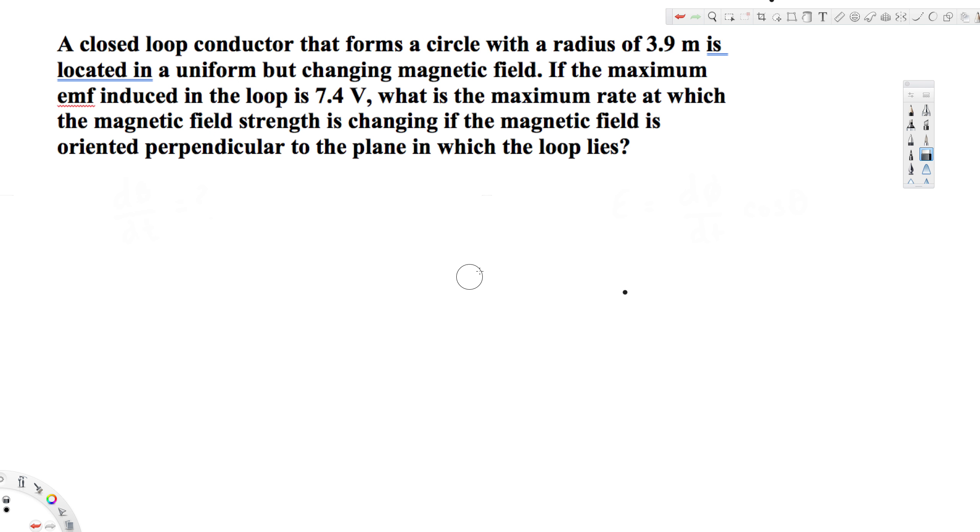Hey, what's going on guys? Let's look at this problem. A closed loop conductor that forms a circle with a radius of 3.9 meters is located in a uniform but changing magnetic field. If the maximum EMF induced in the loop is 7.4 volts, what is the maximum rate at which the magnetic field strength is changing if the magnetic field is oriented perpendicular to the plane in which the loop lies?